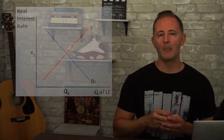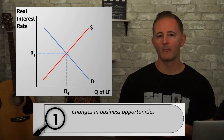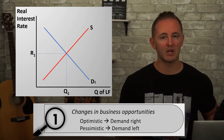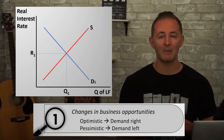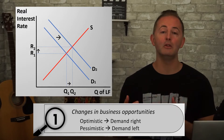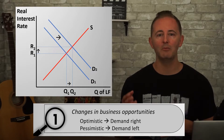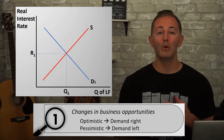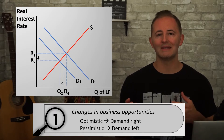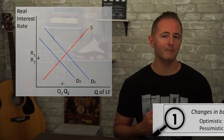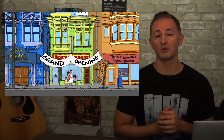Let's talk about shifts of the supply and demand curves, starting with demand. Something has to happen that makes people want to borrow more or less money besides a change in the real interest rate. The first is changes in business opportunities. When businesses and households are optimistic about future business opportunities, their demand for loanable funds increases, shifting the demand curve to the right and pushing up the real interest rate. When they're pessimistic, the demand for loanable funds decreases — if you think the economy is about to go into the toilet, it probably doesn't feel like a great time to open up a second Bob's Burgers location.